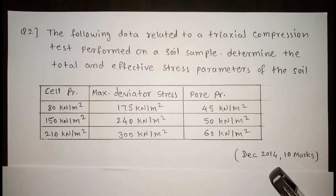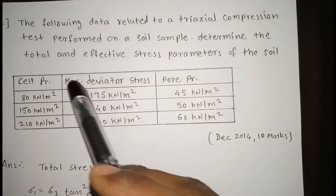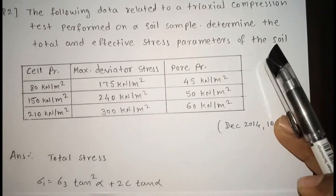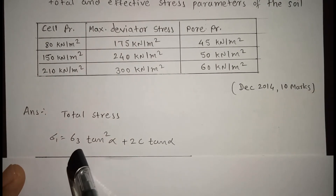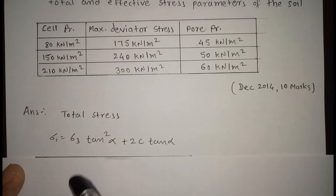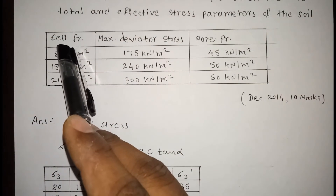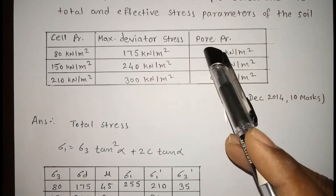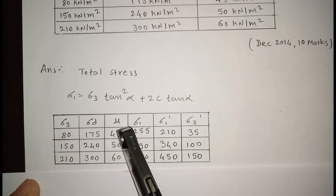This question was asked in December 2014 for 10 marks in Mumbai University exam. Now here we have to calculate total stress and effective stress parameters. Cell pressure is denoted by σ3, maximum deviator stress is denoted by σd, and pore pressure is denoted by μ. So we have σ3, σd, and μ values.